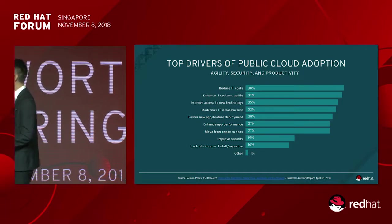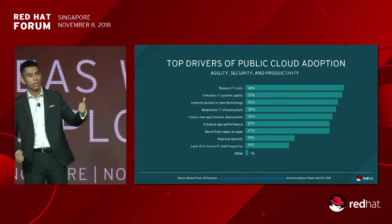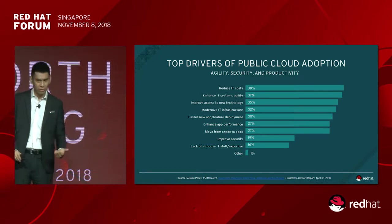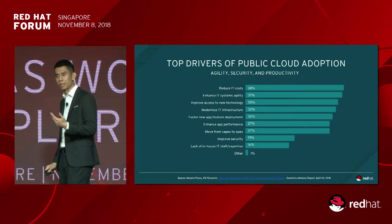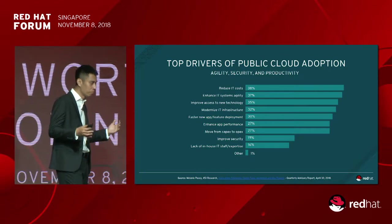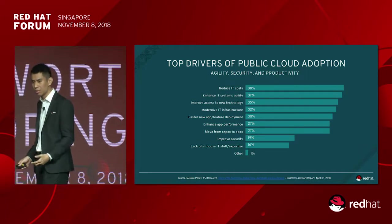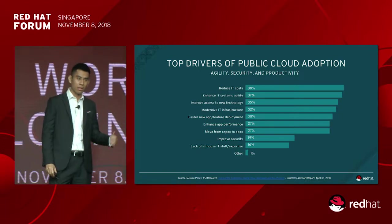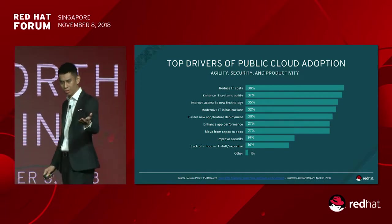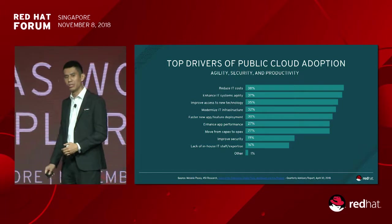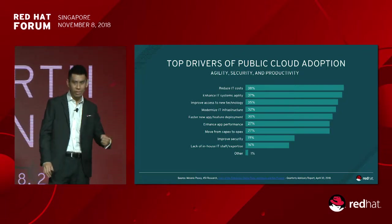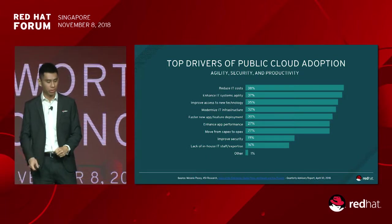Let's look at the top drivers for public cloud adoption. First: IT costs at 48% — you don't need to buy, maintain, or operate servers; everything is taken care of by the cloud provider. System agility at 37% — you have access to almost unlimited cloud resources, scale on demand up or down depending on business requirements. Improved access to new technology at 35% — cloud providers offer a humongous number of SaaS services, and it's easy for businesses to consume them with a credit card.